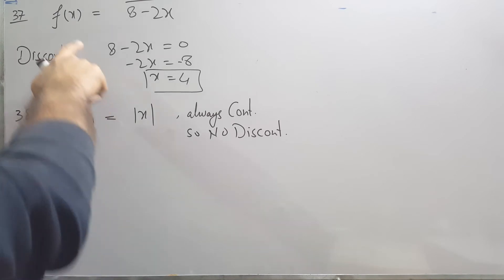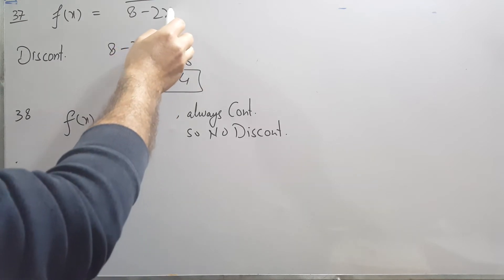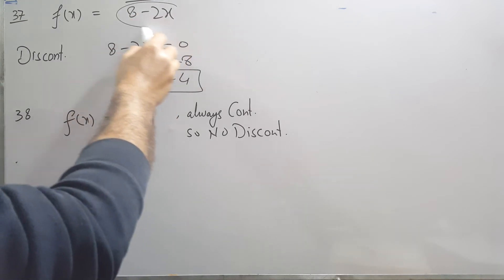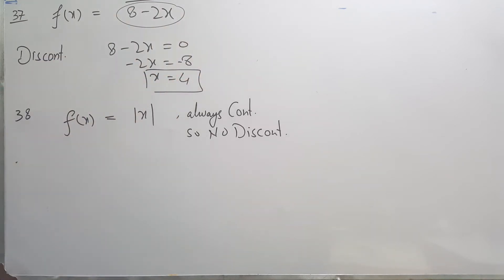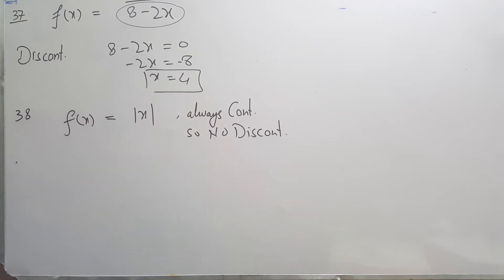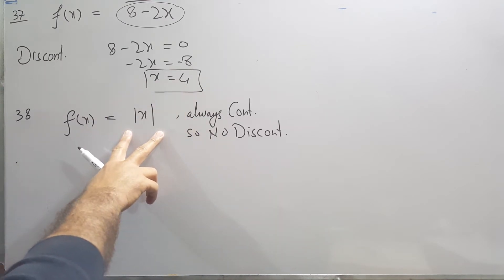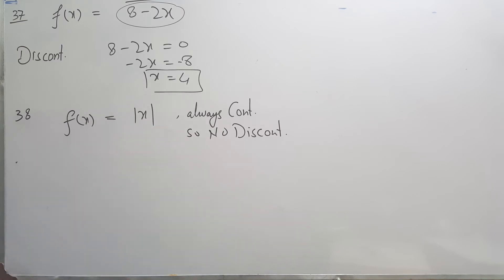Question 37 says f(x) equals 1 over 8 minus 2x. The discontinuity is at 8 minus 2x equals zero; doing the arithmetic gives x equals 4, so the discontinuity is at x equals 4. Question 38 is the absolute value of x, which is always a continuous function, so it has no discontinuity.